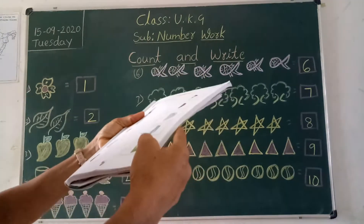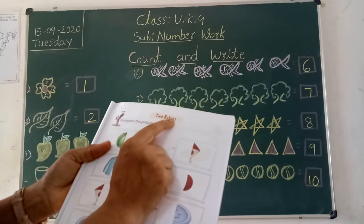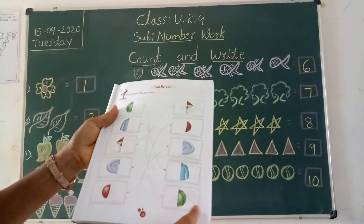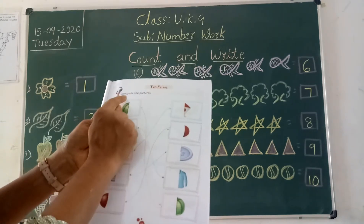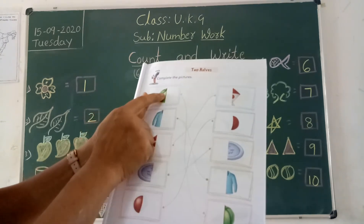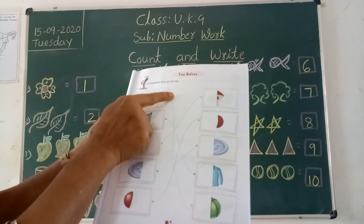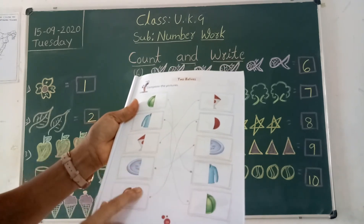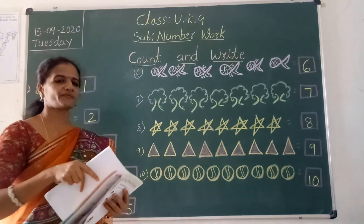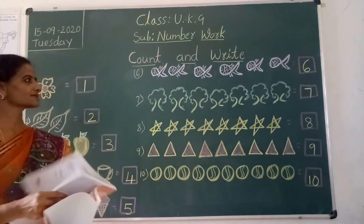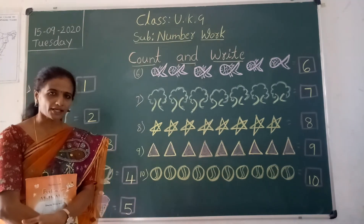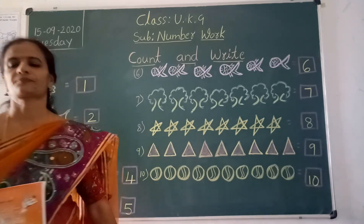Next, page number 19 — two halves. They gave half pictures; you complete the full picture. Take your parents' help to match and complete the pictures, children. What we learned today in this class: we learned count and write. See you in the next class, thank you.